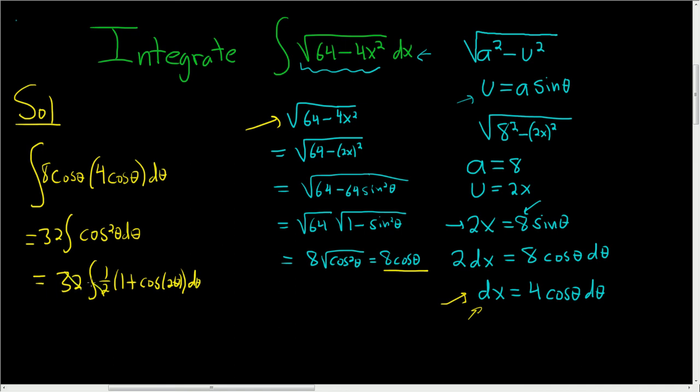This is going to be 16. So breaking the integral up, we have 16 d theta plus 16. And then we have the integral of cosine 2 theta d theta.